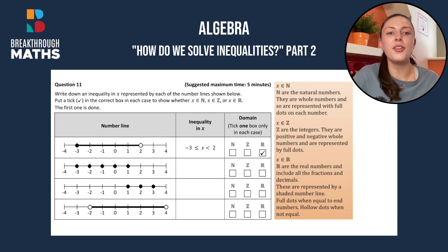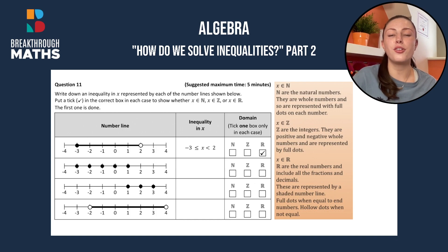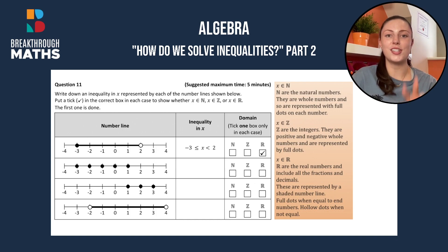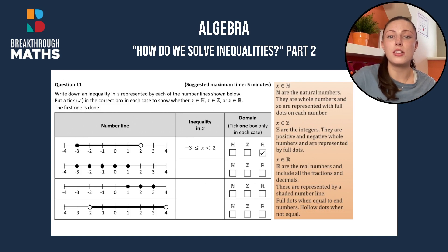As you can see on the right hand side in orange, I have the three different types of numbers: natural numbers, integers, and real numbers. I'll now explain what each of those different types of numbers are.